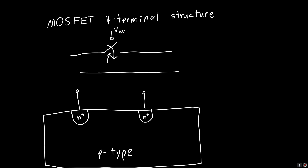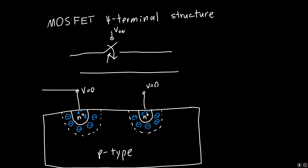When there's no voltage applied — V equals zero on both sides — we get a depletion region formed around these n-plus regions and no free electrons. This depletion region contains negatively charged acceptors because this is a p-type region, and very little of the depletion region extends into the n-plus region because it's very heavily doped. So there's this depletion region blocking the electrons in the n-plus regions from reaching each other — this is our open switch.